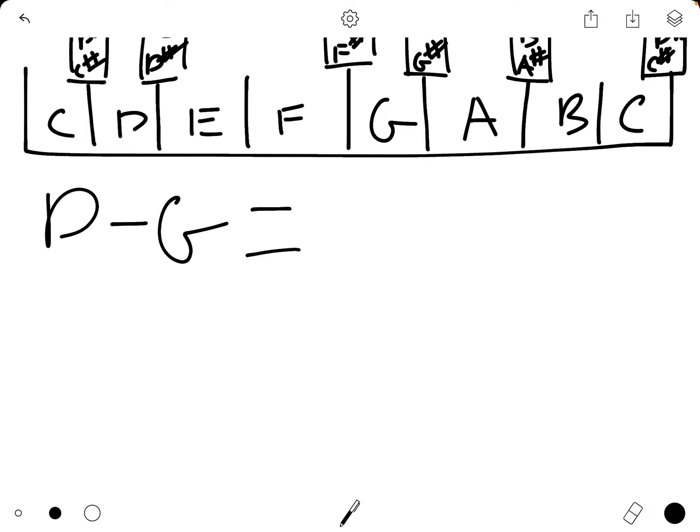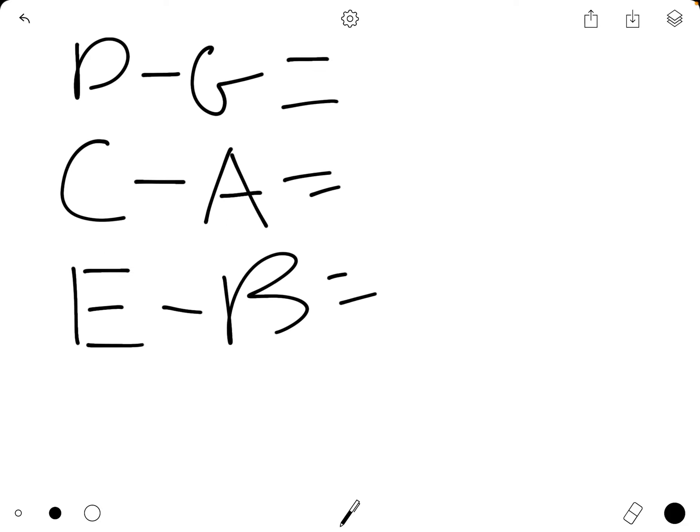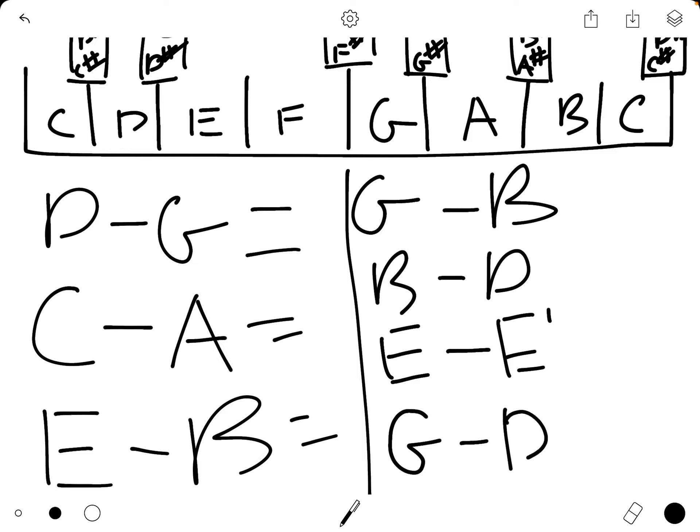So at the bottom of your page, please write these questions, and then I'll have you fill them out, and then we'll work on it afterwards together. Let's go D to G equals, and we'll have C to A, and then E to B equals, and I'm out of room, so I'll do it over here. Let's go G to B, B to D, E up to the next E, and let's go G to D going up. Go ahead and pause the video right here, and then fill in the rest of these answers. Come back to me when you are done.